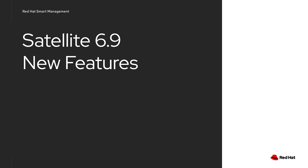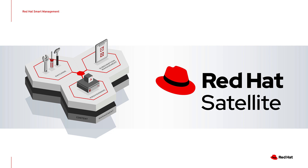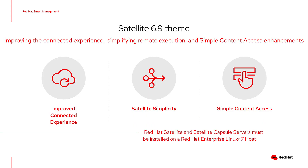Now let's cover the new features of Satellite 6.9. Red Hat Satellite is a scalable platform based on content management and curation. Download content as close to your hosts as possible, create lifecycle environments and content views to shape that content, and use it to patch and provision to suit your needs. The key theme for Satellite 6.9 in one word is simplicity. Key features include improving the connected experience, simplifying remote execution, and simple content access enhancements. Note that Satellite and Capsule servers still need to be installed on a host running RHEL 7, as Satellite does not yet support RHEL 8.